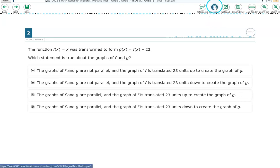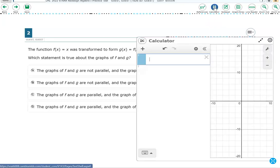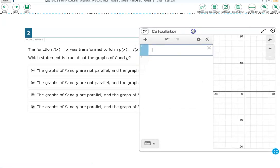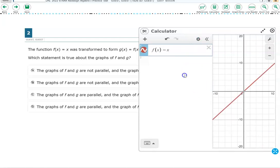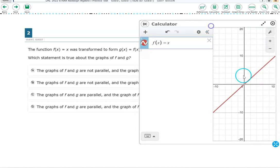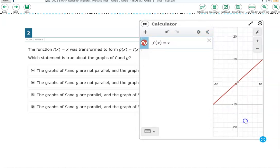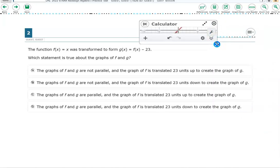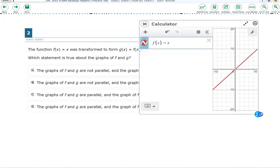All right. So let's go ahead and look at this one. And we're going to click on calculator. We are transforming a function f of x equals x. So the first thing I'm going to do is type f of x equals x. And I see a line in my graph. And then it goes on to say, oops, see this calculator. This calculator definitely gets in the way. You can resize it. So I'm going to do it like that.